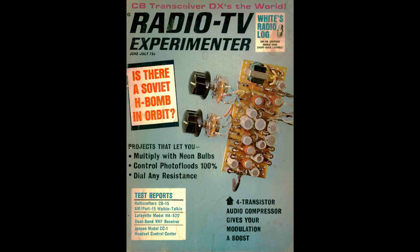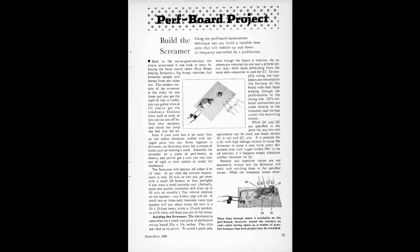Radio TV Experimenter, June-July 1966, right there on the cover. Is there a Soviet H-bomb in orbit? And starting on page 73, Build the Screamer by Herb Friedman.